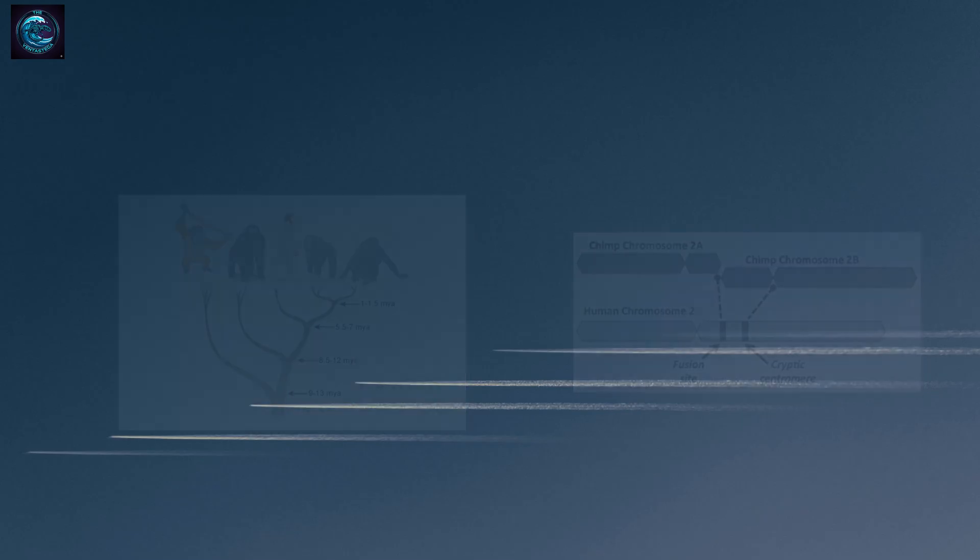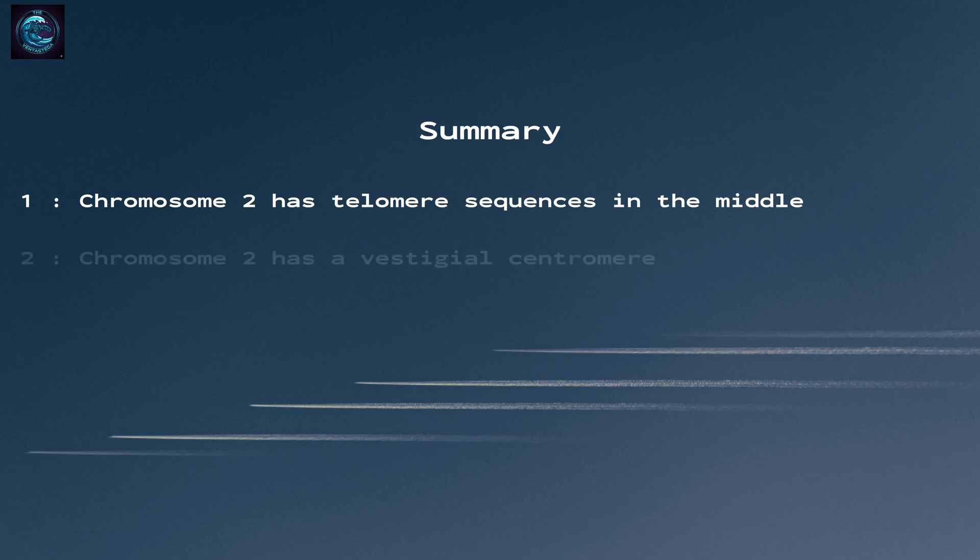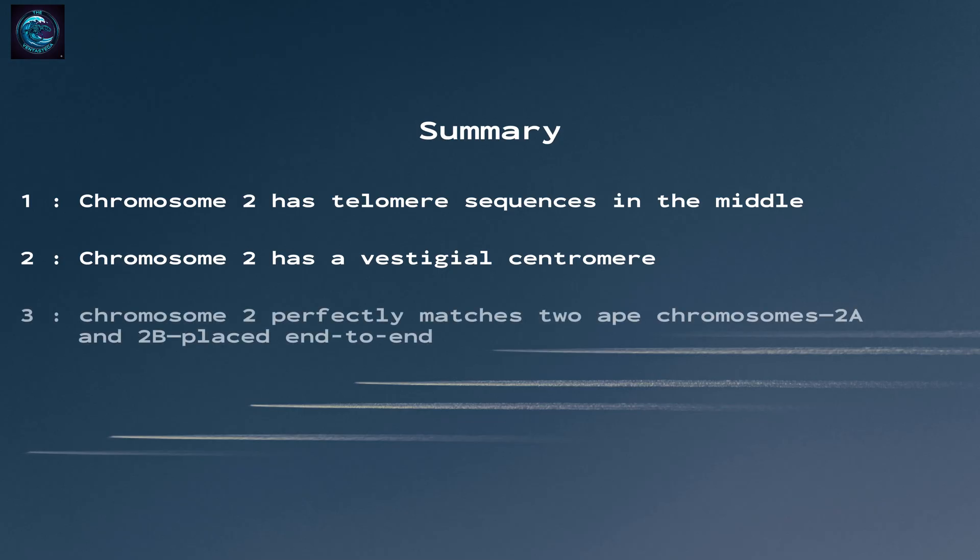Let's recap why this is such powerful evidence for evolution. First, chromosome 2 has telomere sequences in the middle, exactly where two chromosomes would have fused. Second, chromosome 2 has a vestigial centromere, the deactivated remnant of what was once a functional centromere. Third, when we compare human chromosome 2 to great ape chromosomes, we find that it perfectly matches two ape chromosomes, 2a and 2b, placed end to end. The gene order, the DNA sequences, everything lines up.